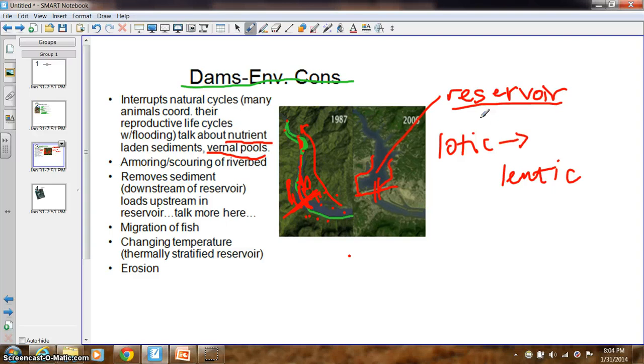Aerobic bacteria will start decomposing all of that biomass that's been flooded in the reservoir, therefore decreasing dissolved oxygen, therefore decreasing the quality of the water. Because DO is kind of the governing abiotic factor in water quality, as well as pH. So there's that issue.